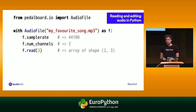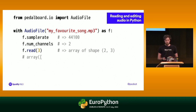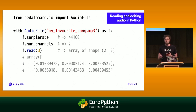We can actually read the data out with f.read and ask for just the first three samples of the file. Pedalboard gives us the first three samples in each channel, so we get back an array with shape (2, 3) — two channels for left and right, and three frames of audio. If you're not familiar with multidimensional arrays, you can think of them as arrays of arrays, but each subarray has a fixed shape. We can use the shape parameter to see what shape the overall array has.